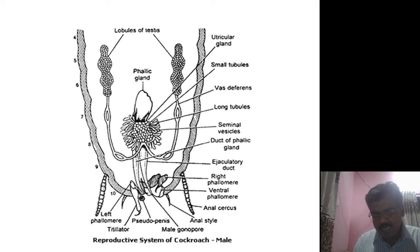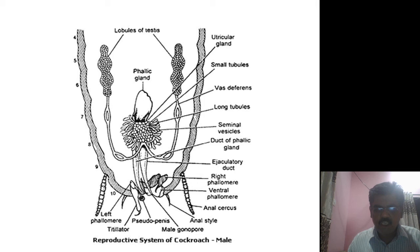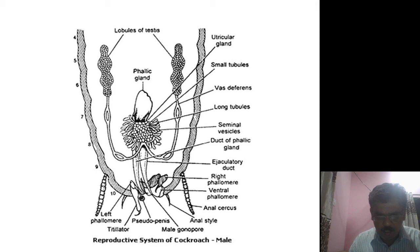The testes are attached to the pair of vas deferentia, which come together to form the ejaculatory duct. Along with that, there are two accessory glands: the mushroom gland (utricular gland) and the phallic gland, whose secretions help in nourishment of the sperm and formation of the spermatophore. The last part is the male genitalia or male gonapophysis with three phallomeres: right phallomere, left phallomere, and ventral phallomere.